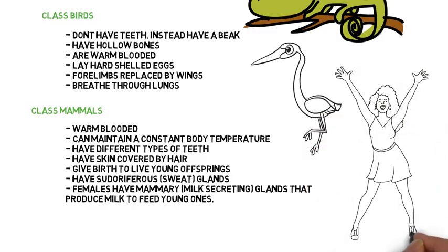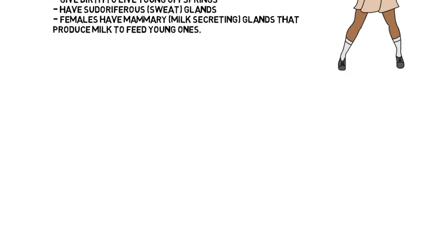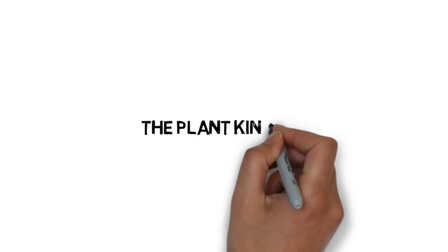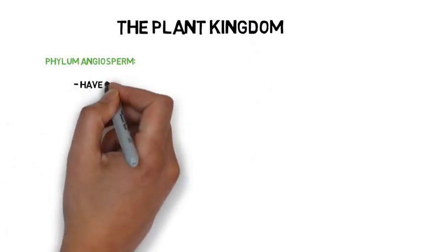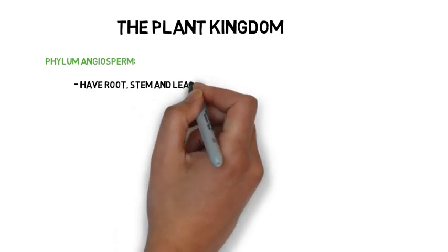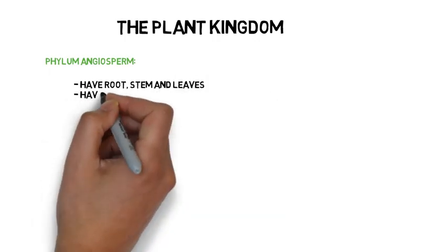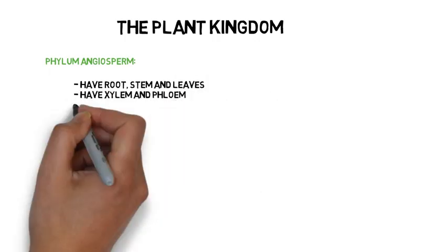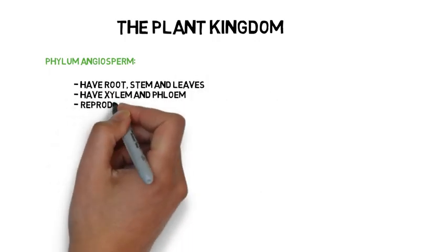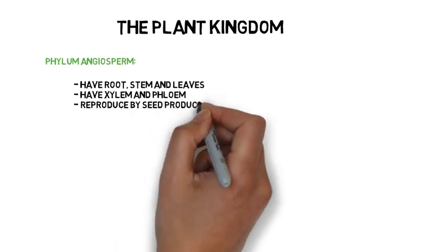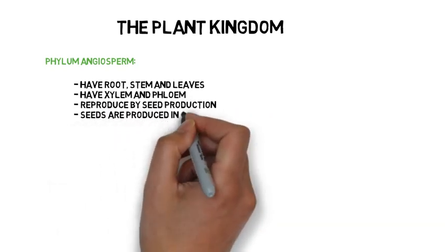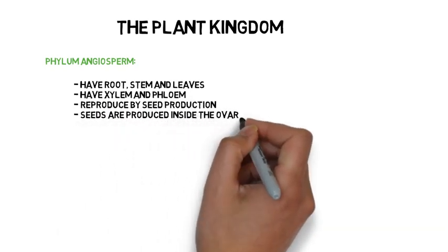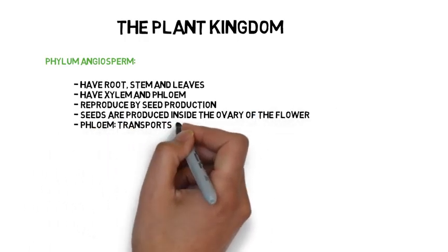The Plant Kingdom. Phylum Angiosperm have roots, stems, and leaves, have xylem and phloem, and reproduce by seed production. Their seeds are produced inside the ovary of the flower. The phloem transports sugar, and the xylem transports water and minerals.